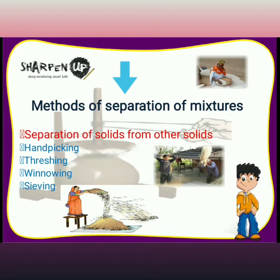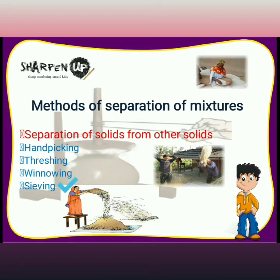Now let's discuss the methods of separation of mixtures. Separation of solids from other solids can be done by four methods: the first is hand picking, the second is threshing, the third is winnowing, and the fourth is sieving.